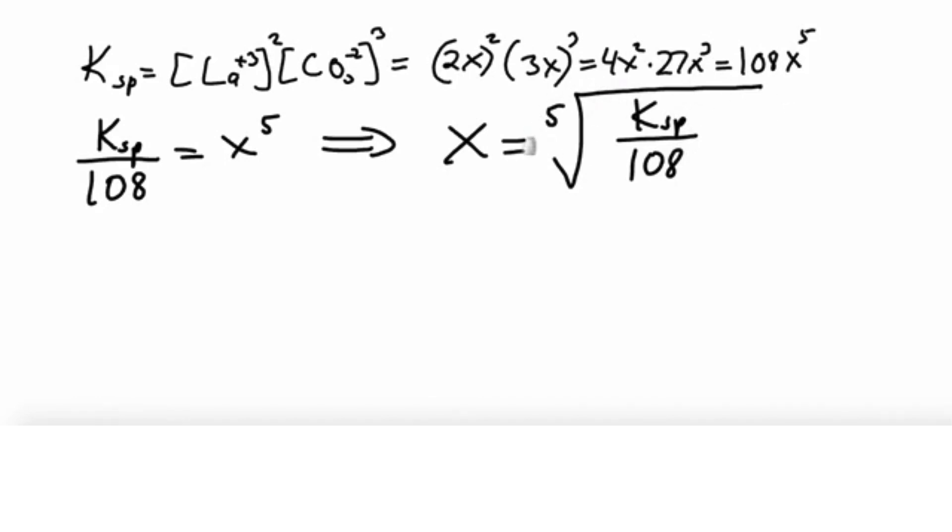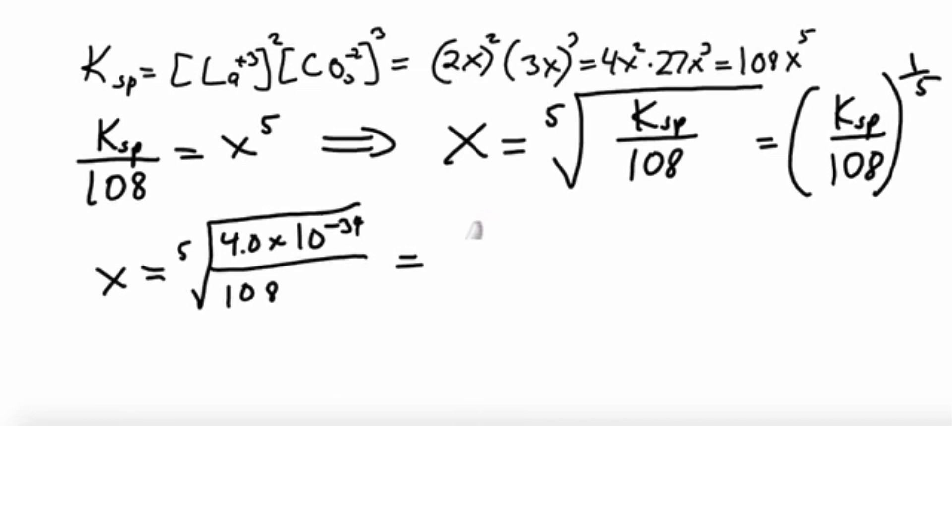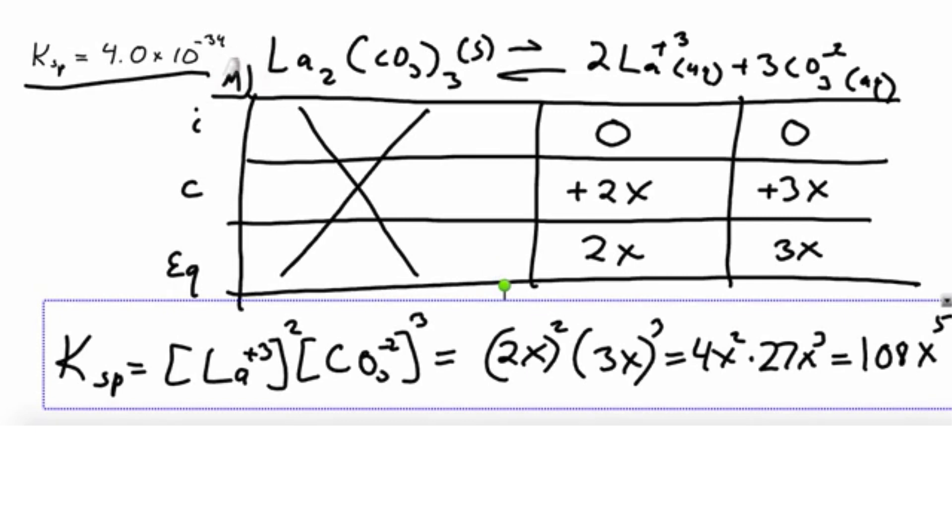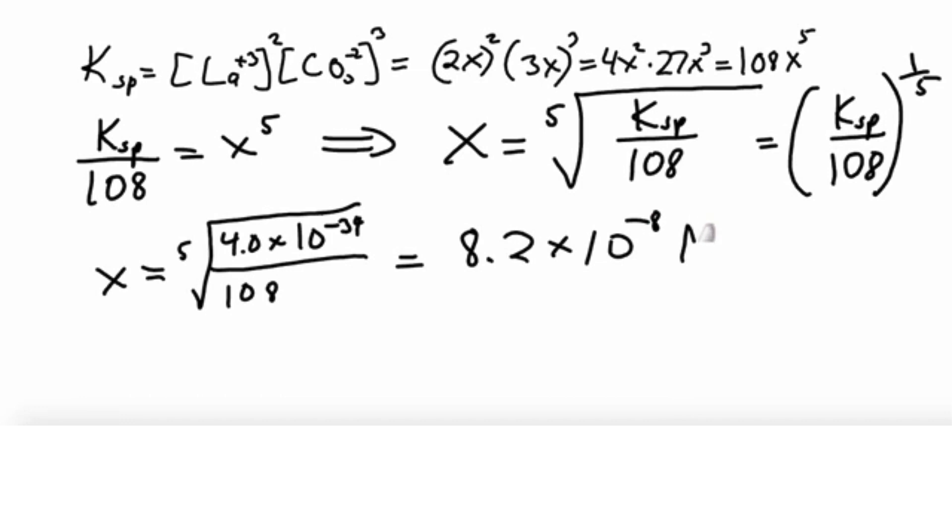And if you don't have a variable root key on your calculator, you can just write this as Ksp over 108 to the 1/5th. So let's plug those numbers in. x is equal to the Ksp, which we said was 4.0 times 10 to the negative 34th, and we divide by 108. And that is equal to 8.2 times 10 to the negative 8th. This number, since we're calculating concentrations, does have units. If we go back to our ICE table, we can see that we wrote everything out in molarity. So this is 8.2 times 10 to the negative 8th molar. And that is the solubility of our salt in pure water.